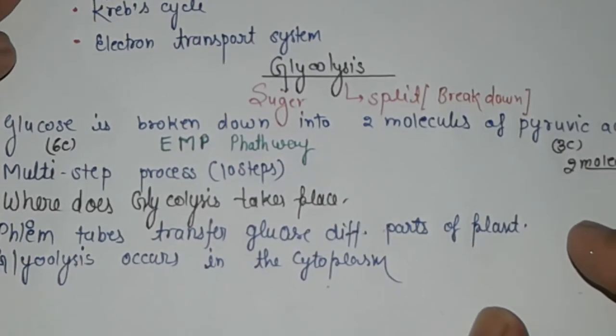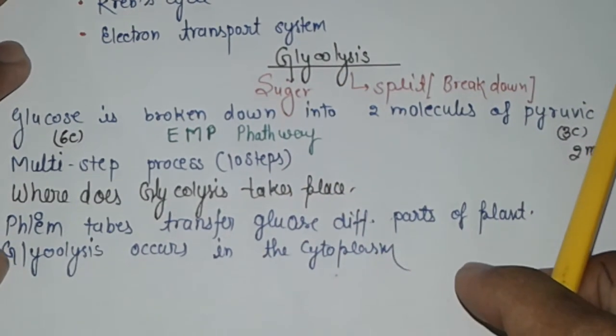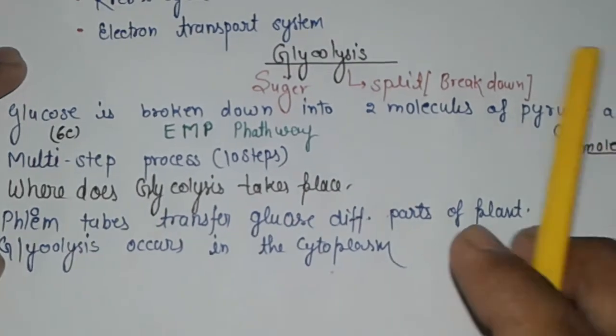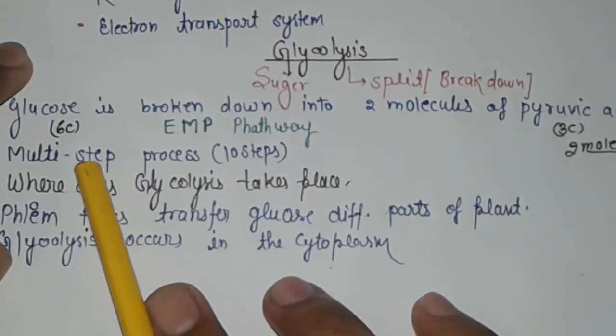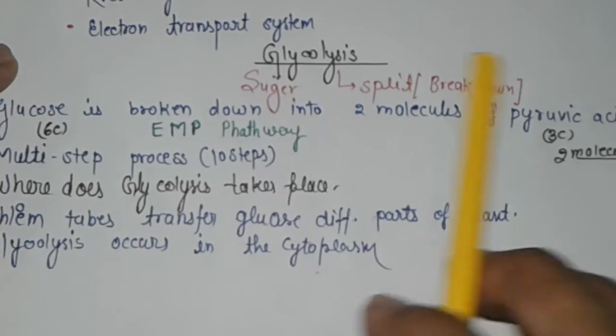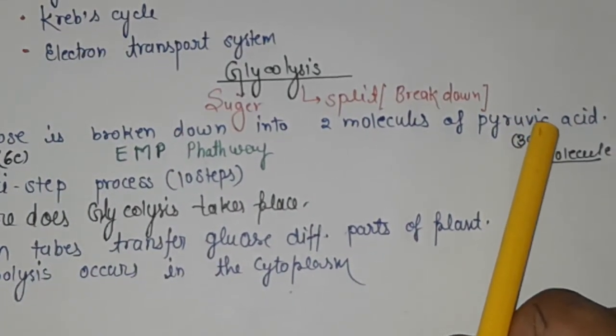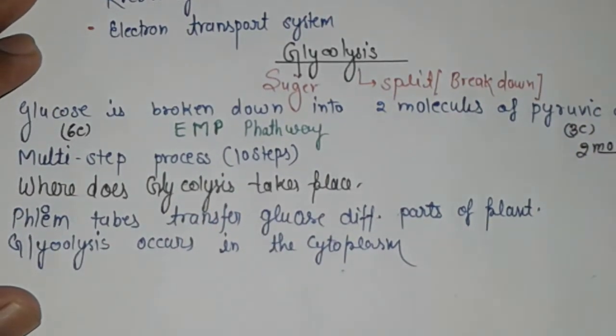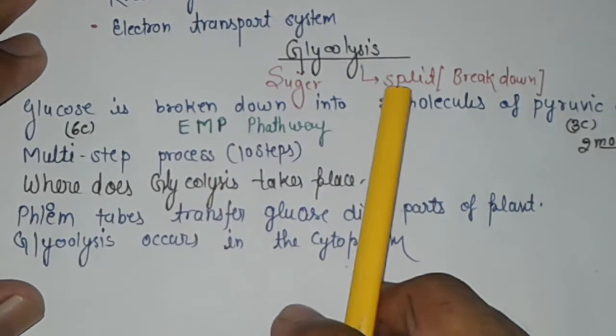Now first we'll discuss glycolysis. Glycolysis means sugar splitting or breakdown. In glycolysis, glucose is broken down into two molecules of pyruvate acid. Glucose is a six carbon compound and pyruvate acid is a three carbon compound. Two molecules of pyruvate acid are formed from one molecule of glucose. This is a multi-step process, a 10-step process. It is also known as EMP pathway, named after three scientists Embden, Meyerhof, and Parnas.